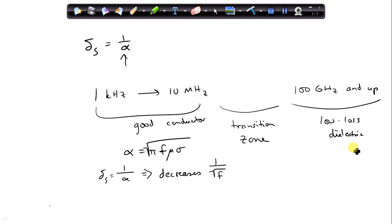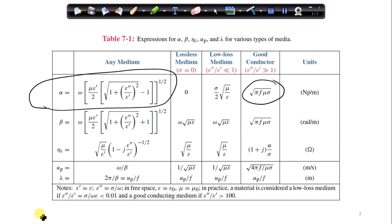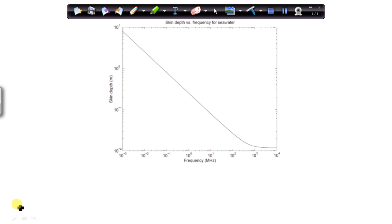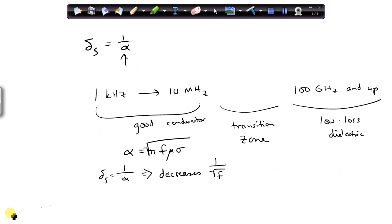Then for the low-loss dielectric, low-loss medium, we're going to use this expression. So for a low-loss dielectric, we have alpha is sigma over 2 square root of mu over epsilon. And this does not change with frequency. So this is just a constant value.